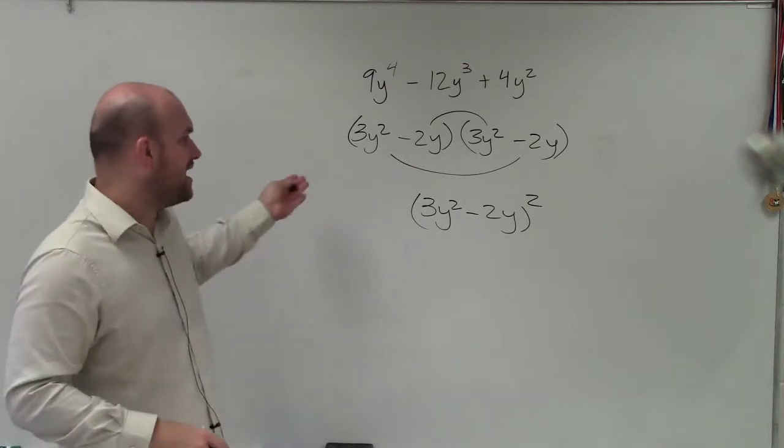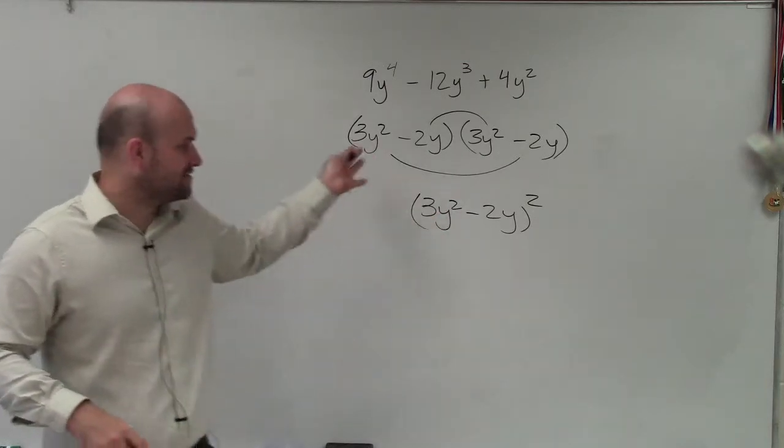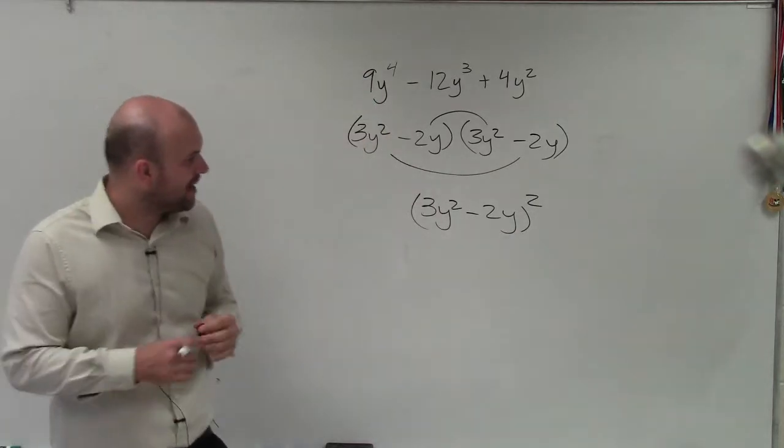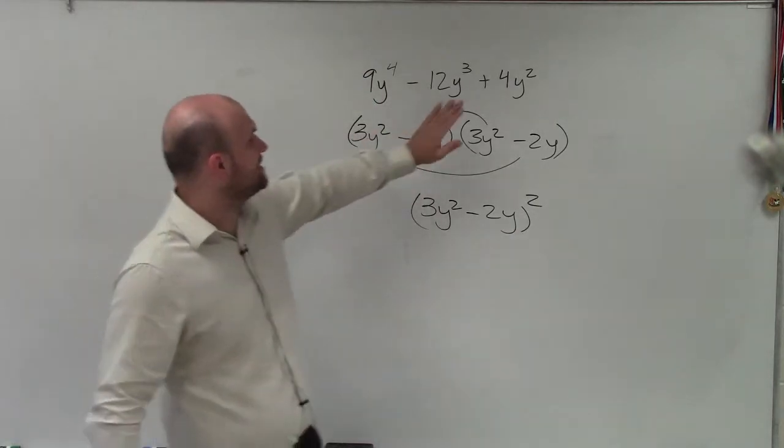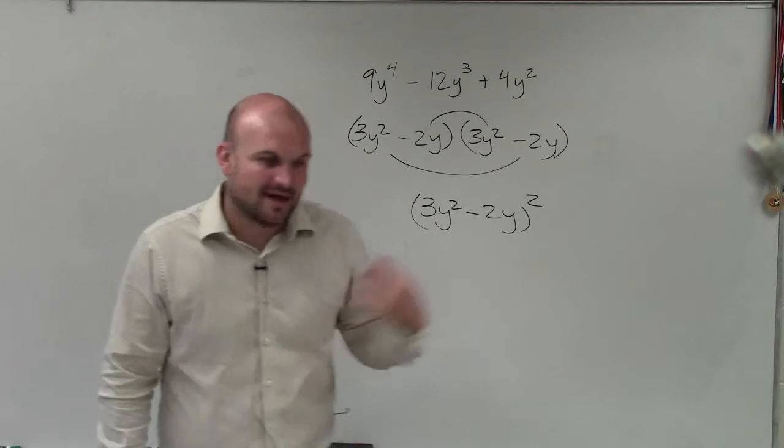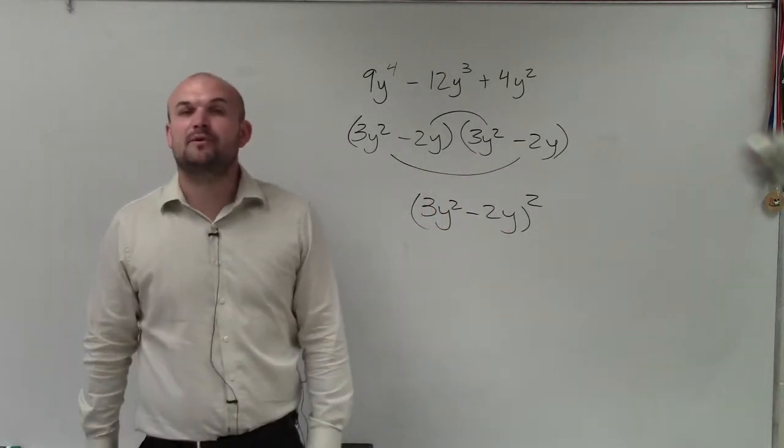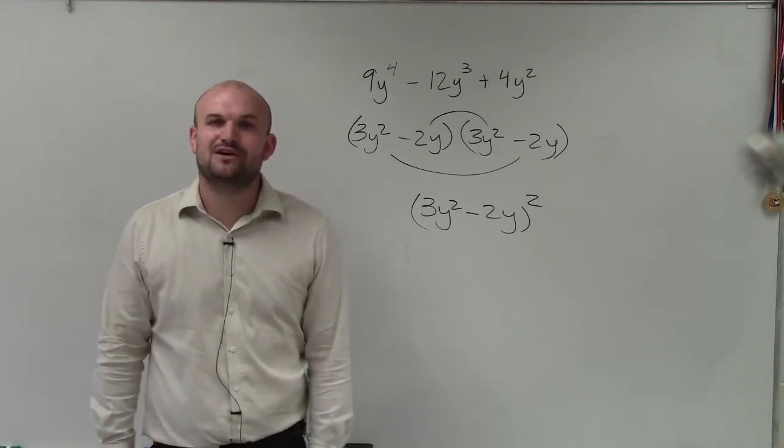OK? Where you could still factor out your y squared, or look at that, and have 3y minus 2, which would have happened if we would have just factored it out from there. And then you would have had to factor out a y squared. But there you go, ladies and gentlemen. That is one way to factor a perfect square trinomial. Thanks.